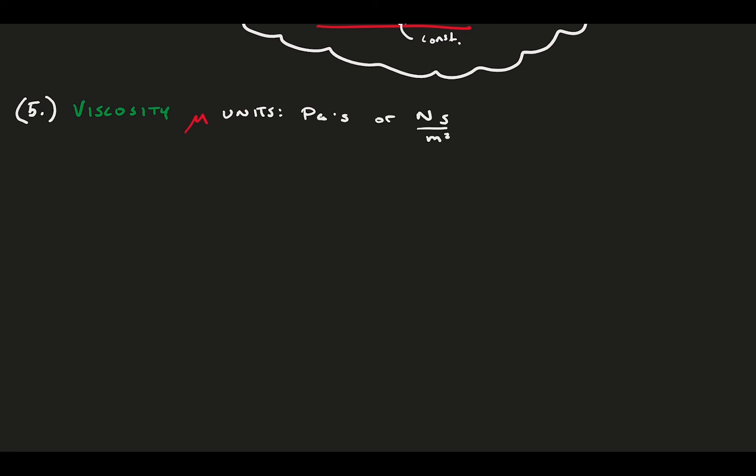Sometimes, you might see the kinematic viscosity, which is the Greek letter nu, which is the dynamic viscosity normalized by density, but they both represent viscosity forcing. Essentially, viscosity is the fluid form of friction.